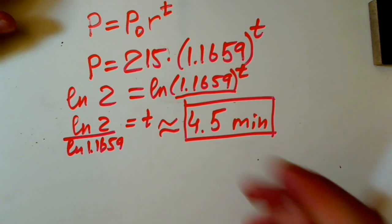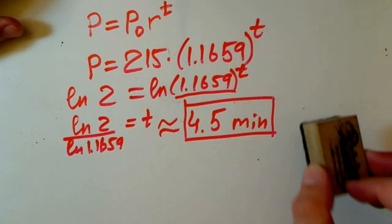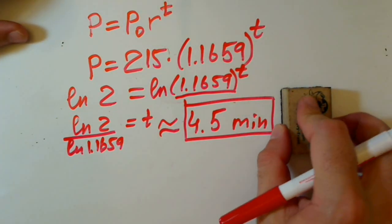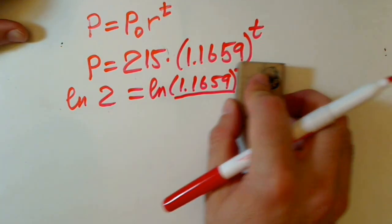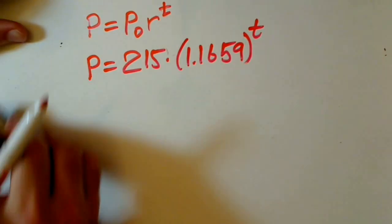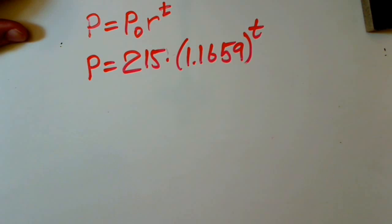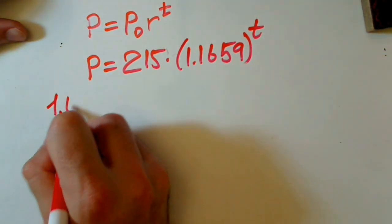Asks when the population of bacteria will be 1 million. To predict this, again, we just plug in our model, 1 million.